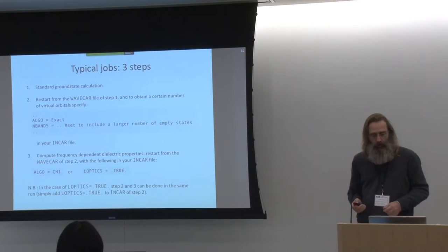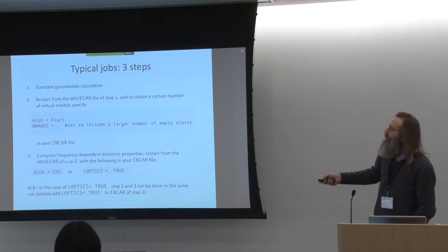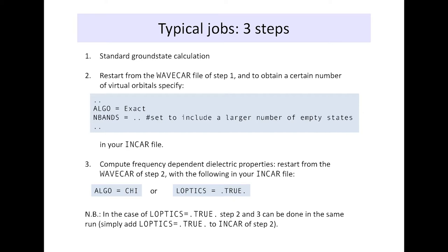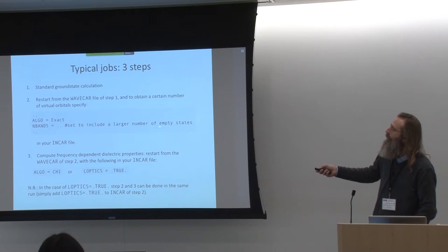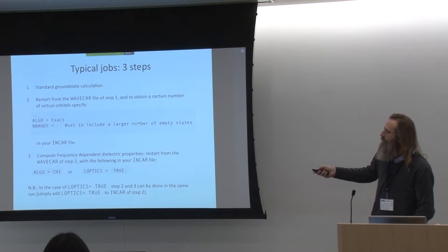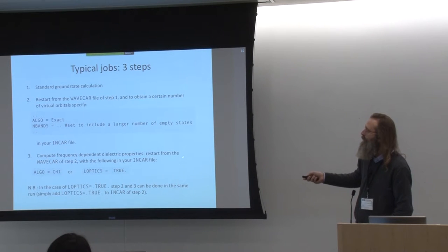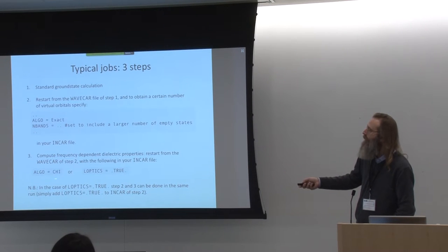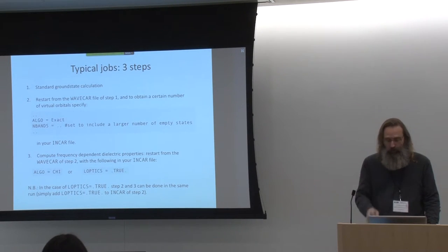These are the typical steps you would do for a calculation of dielectric properties: Step 1 is a ground state calculation; Step 2 is this exact diagonalization step, where you ask for a larger number of empty states — the matrix is diagonalized exactly and a bunch of those empty states are kept and written out to your WAVECAR file; Step 3, you restart again from that file using either of these methods to compute dielectric properties.